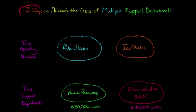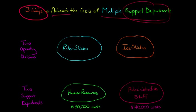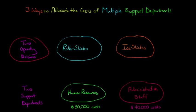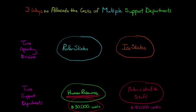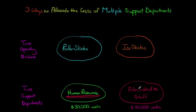In this video, we're going to discuss three ways to allocate the costs of multiple support departments when those support departments are providing services to each other. Let's take a company that has two operating divisions — they manufacture roller skates in one division and ice skates in the other. This company also has two support departments: an HR department with $30,000 in costs and an administrative staff division with $40,000 in costs.